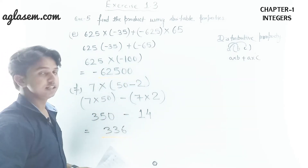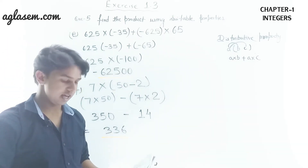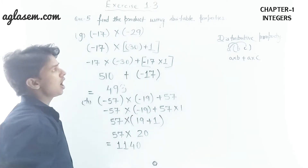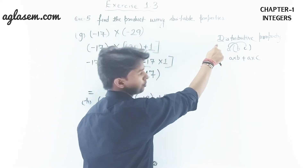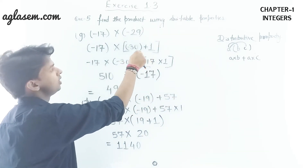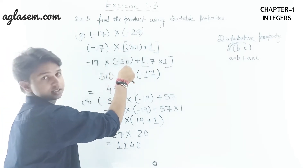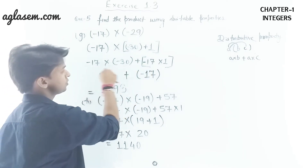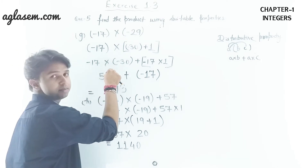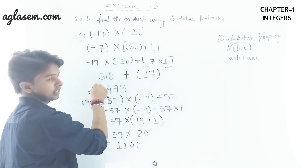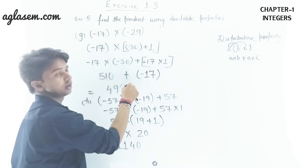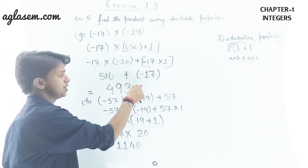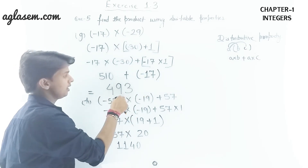Part g: (−17) × (−29). We split −29 as −30 + 1 and use the distributive property: (−17) × (−30) + (−17) × 1. Solving: (−17) × (−30) = 510 (minus × minus = plus), and (−17) × 1 = −17. Adding: 510 + (−17) = 493. This is the product for Part g.